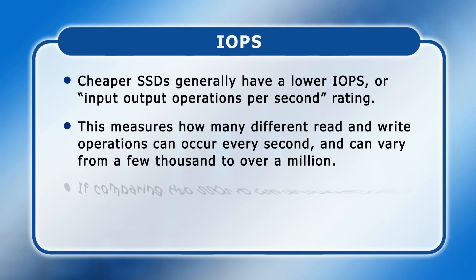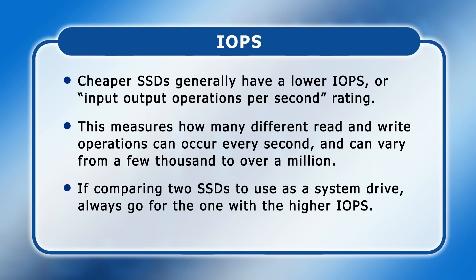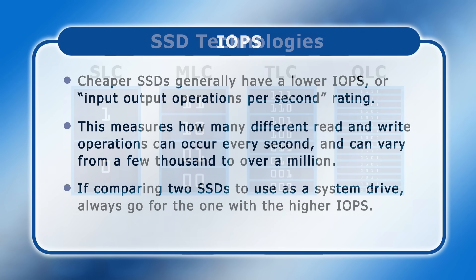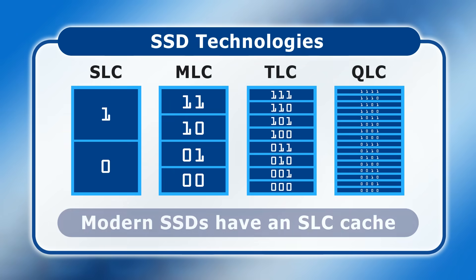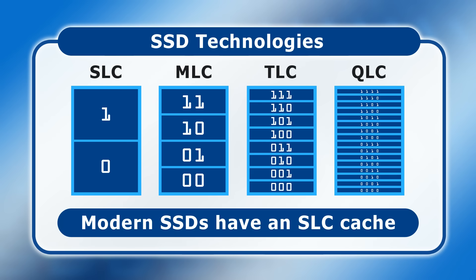So if you're comparing two SSDs to use as a system drive, always go for the one with a higher IOPS specification. Returning to SSD technologies, the more bits are stored in each memory cell, the slower data can be written. And because TLC and QLC flash write data far more slowly than most SSD interfaces can deliver, modern drives are equipped with an SLC cache.